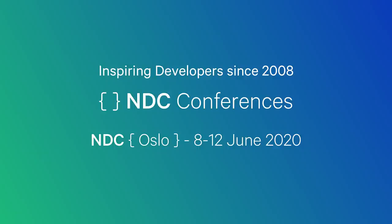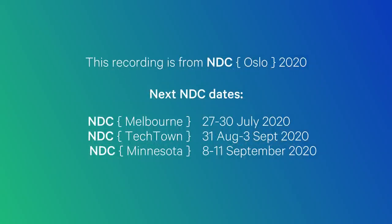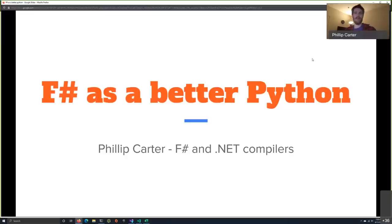My name is Philip Carter. I work at Microsoft on the F# and .NET compilers team — or rather, it's the .NET team with different sub-teams, and one of those has F# and compiler work. I've been working in this space for the past four years, focusing a lot on F# and helping drive some of the more modern things we've been doing with the language.